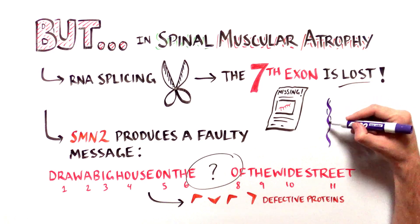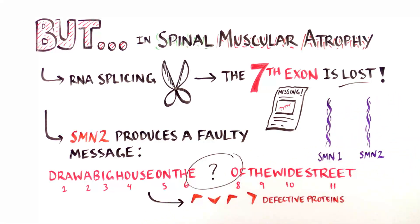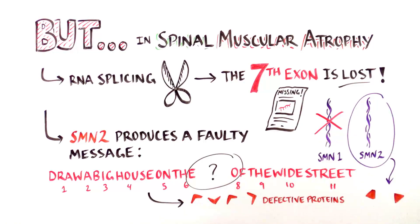Remember that SMA patients have to rely solely on the SMN2 gene to produce the survival of motor neuron protein. But due to exon skipping, not enough usable protein is made to support normal muscle development.